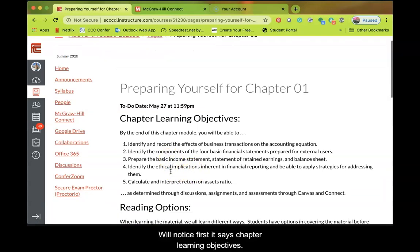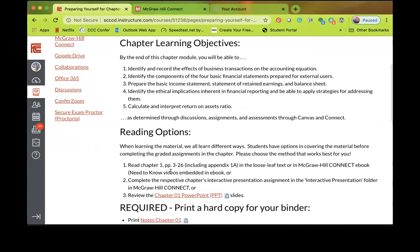So you'll notice first it says Chapter Learning Objectives, and you move down to Reading Options. You have three options. I do not recommend you do all three of these options. You need to choose which method works best for you. Everyone learns differently, and so you need to figure out which method will be your best.